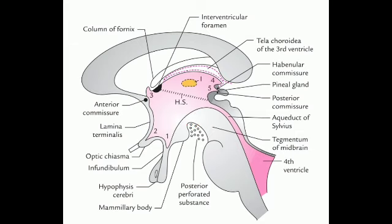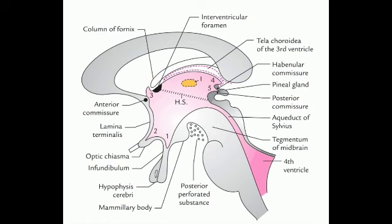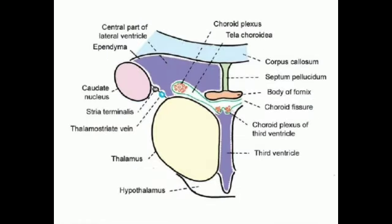The floor is also related to the tegmentum of the midbrain. The roof of the third ventricle is formed by ependyma, which lies across the two thalami — right and left. We can also appreciate the tela choroidea and choroid plexus, which are related to the roof of the third ventricle.